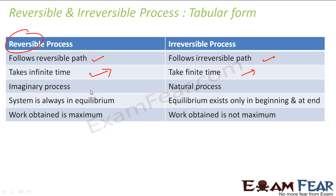The reversible process is actually an imaginary process — it doesn't truly exist in the real world. A process close to reversible can be created in a lab with careful experimentation. All real natural processes — like burning something — are irreversible. In a reversible process, the system is always in equilibrium with the surroundings; in an irreversible process, equilibrium exists only at the start and at the end.